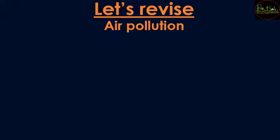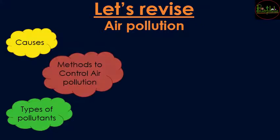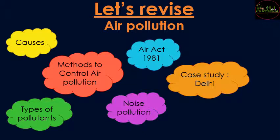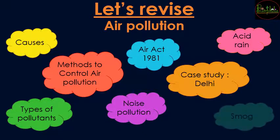Let's cover the previous part in short. We started with air pollution, saw about the causes of air pollution, the types of pollutants, the methods to control air pollution, the Air Act of 1981, noise pollution, the case study about Delhi and Acetrine, as well as smog. These were the key highlights of part one. If you do not remember any of those topics, check out the previous part given in the description box.